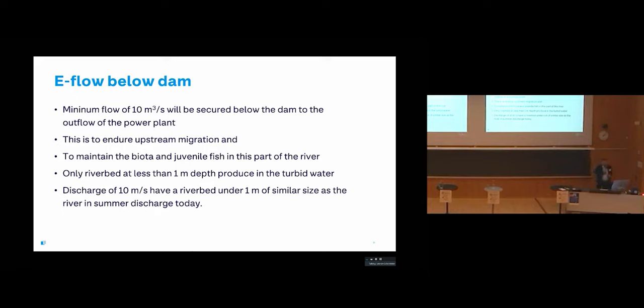Because this is a glacier-fed river and it's turbid, the sun or the light only goes down to one meter. So everything below that is dark.